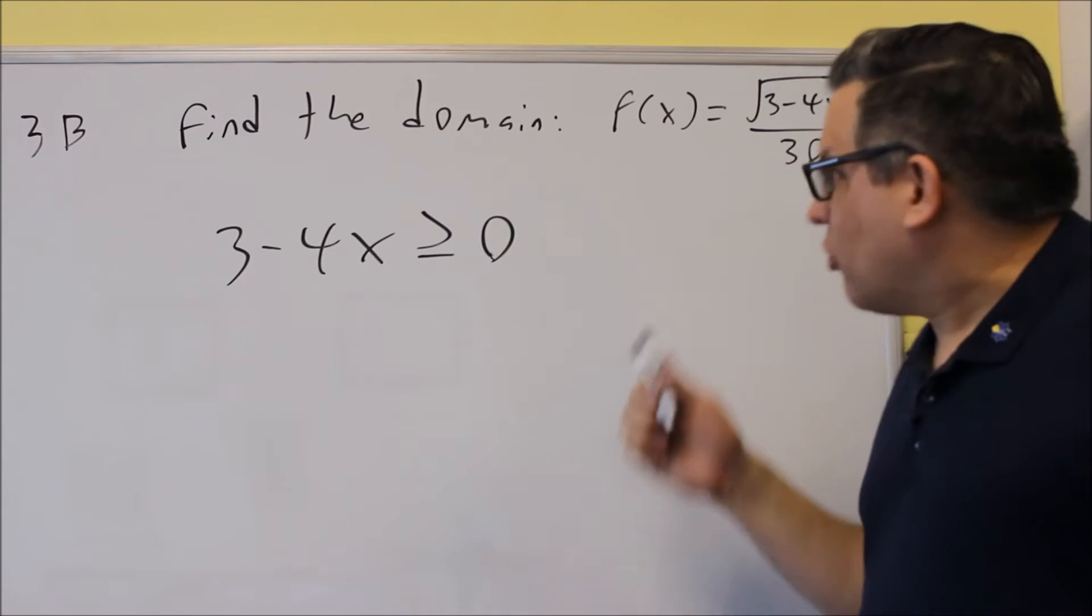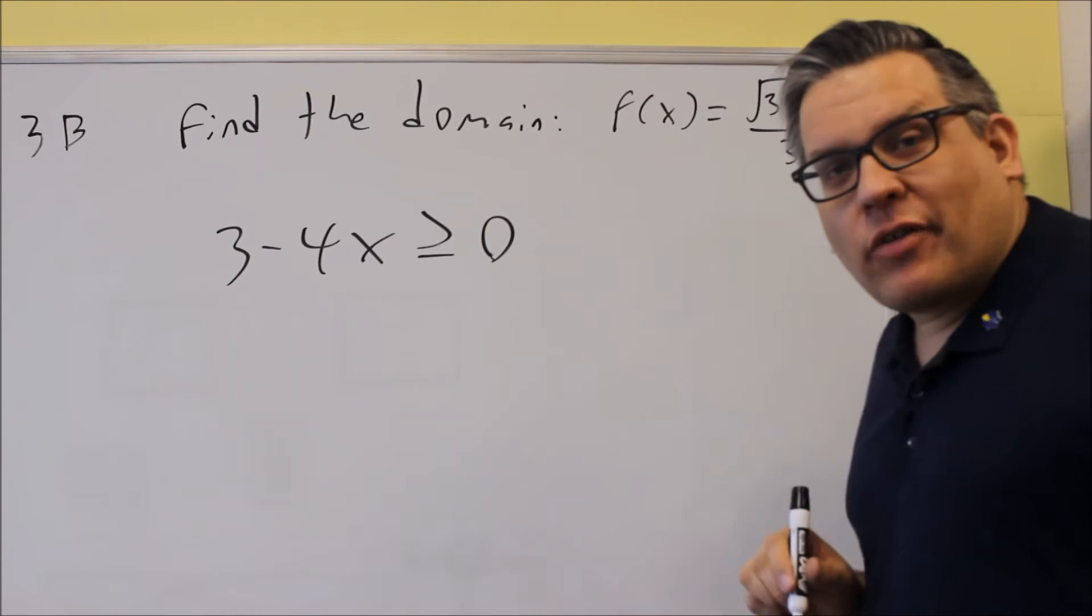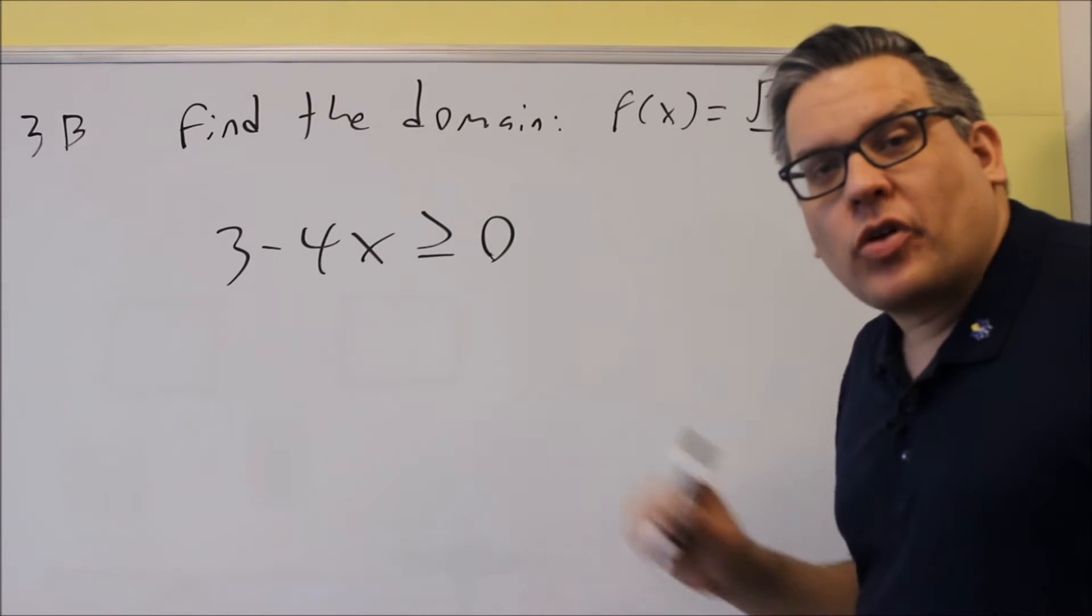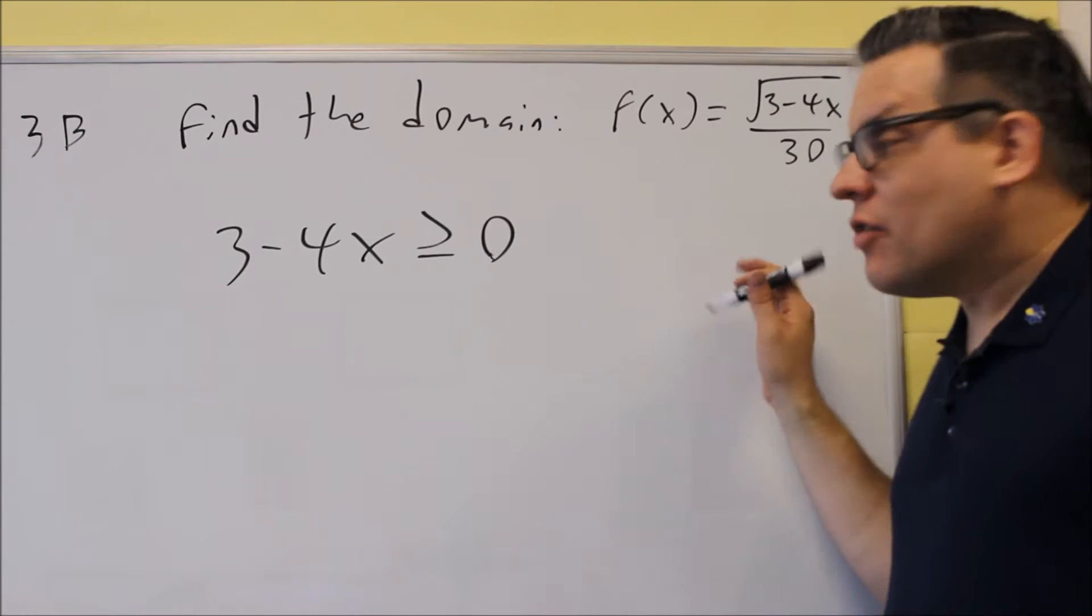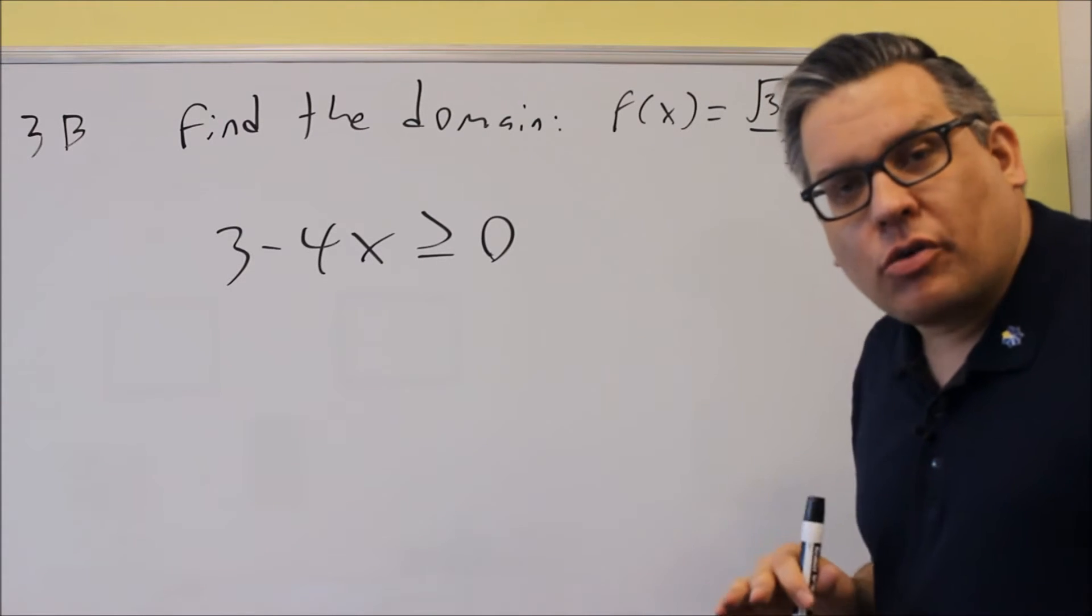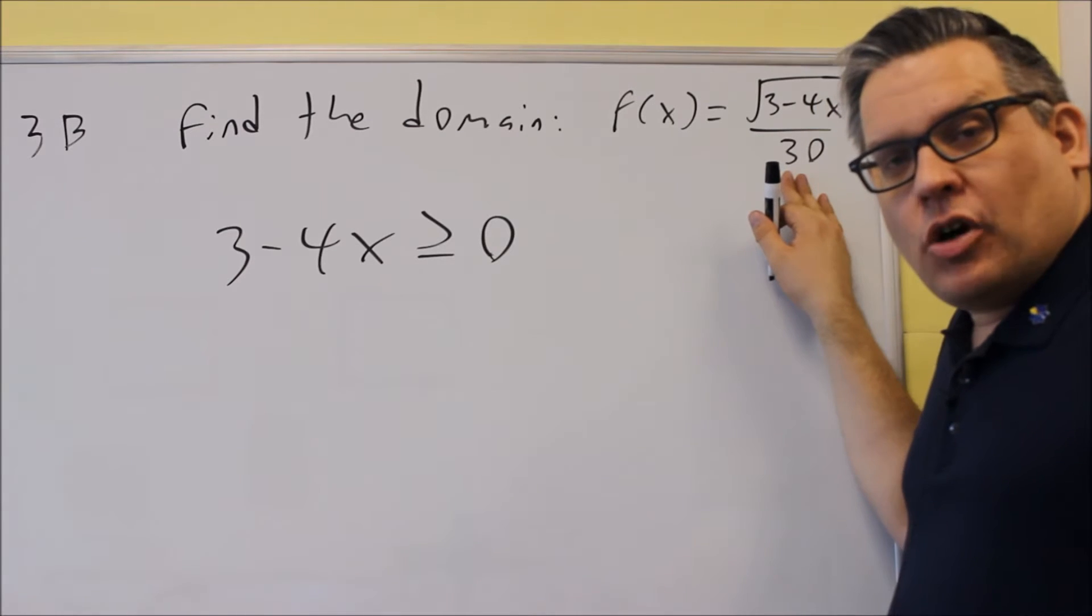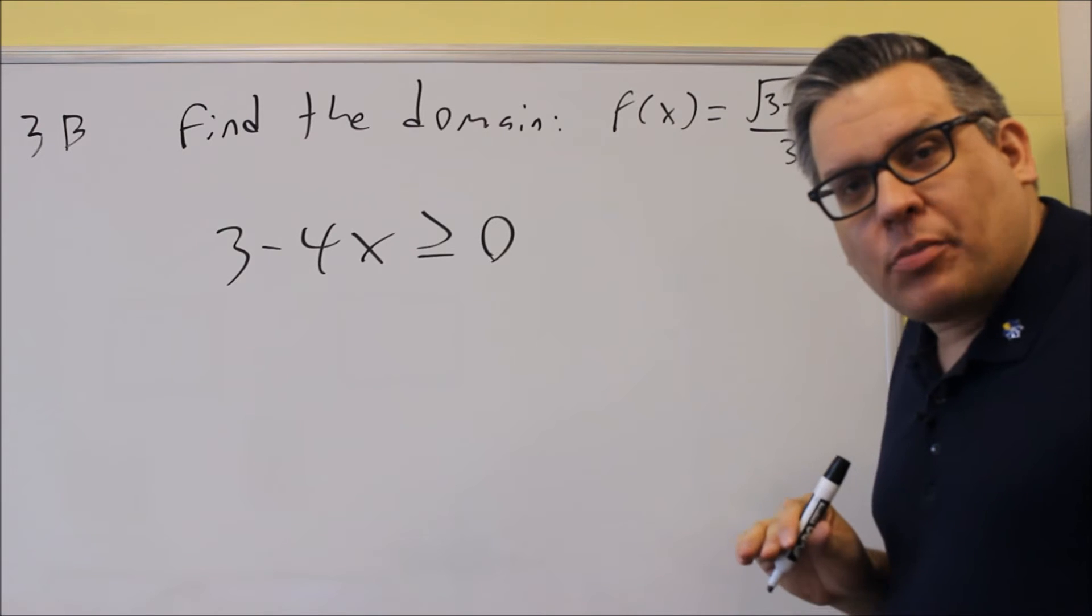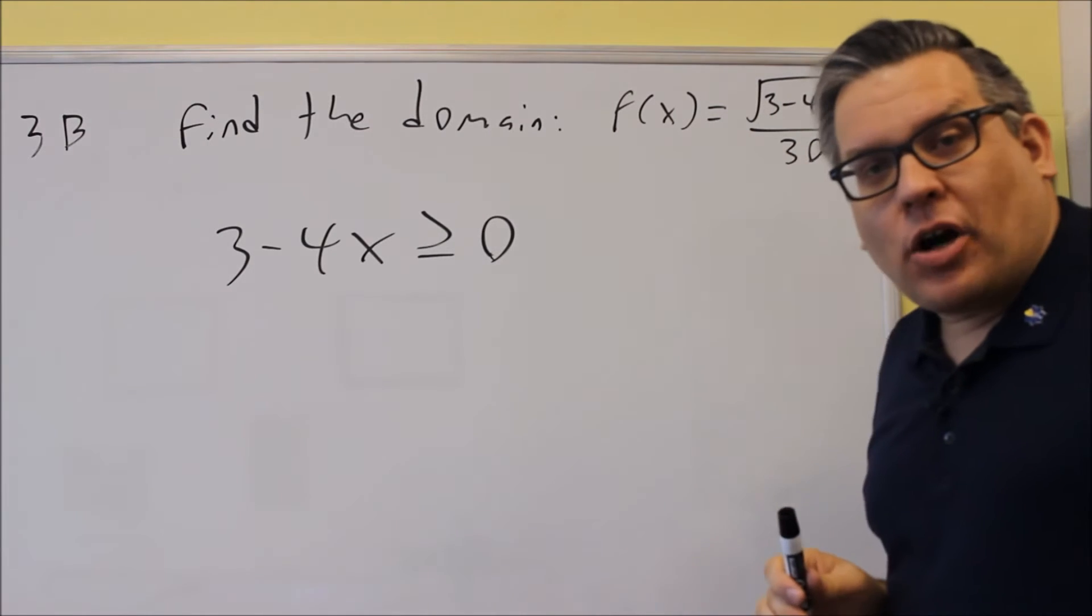So the question is, what about the bottom? Well, the bottom, that's never going to be able to be equal to zero, because we just have a number down below. The only time we ever have to deal with that is if there's a variable down below. Since there's no x down there, we don't need to deal with it. So the part we have down below, that's never going to be zero, therefore we don't have to worry about that.